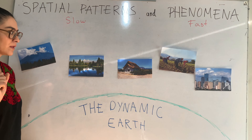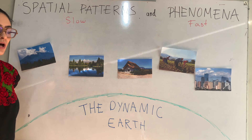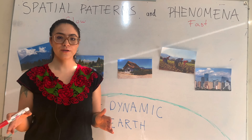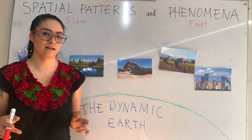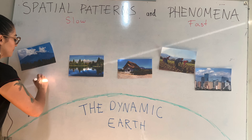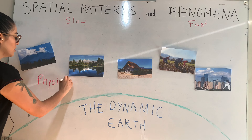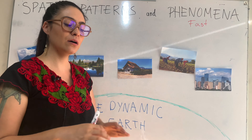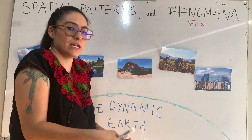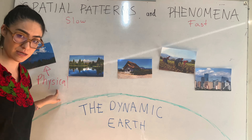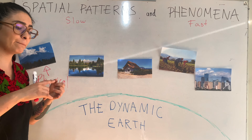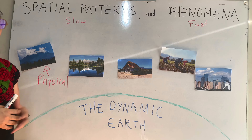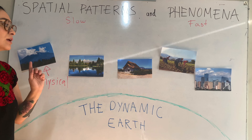Maybe you can see something here — we have three categories. One category is patterns that are only physical, caused by the Earth itself. When we are talking about physical patterns, no organism is creating them. The origin is the Earth's dynamic — only the planet is moving. It could be earthquakes causing mountains, for example. Different processes, but not related to organisms.